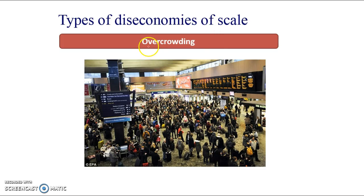Overcrowding is an external diseconomy of scale — this is when the industry itself gets too big. We might see overcrowding and congestion in certain areas; Silicon Valley is reportedly very congested with difficult parking and high pollution. Firms have to spend money on congestion solutions. There can also be pressure on raw materials — so much demand for factors of production that it increases their costs, raising average costs overall.